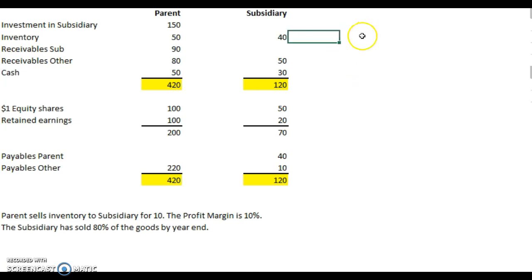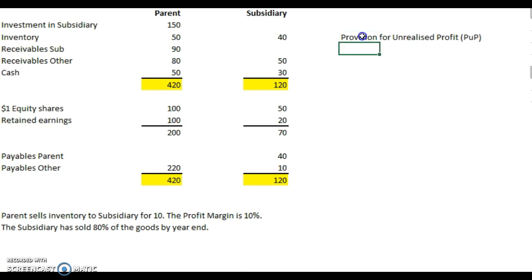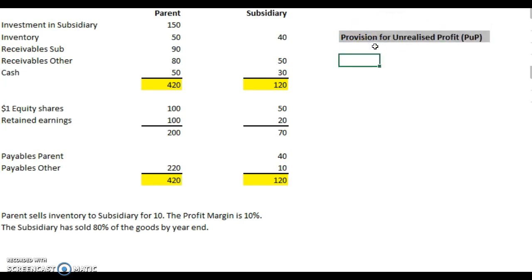This is going to be the provision for unrealized profit, also known as a PUP. Let's look at how much the total profit would be. We've sold goods worth 10,000 and the profit margin is 10%. The total sale value is 10, the margin is 10%, so the profit — which is the same as the margin — is 10% times 10,000.